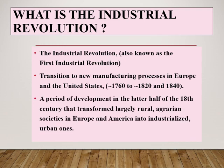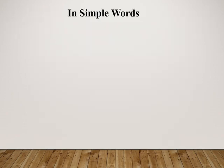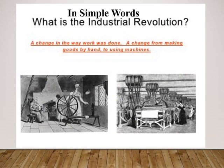This transition took place in the period from about 1760 to sometime between 1820 and 1840. It marked a period of development in the latter half of the 18th century that transformed largely rural, agrarian societies in Europe and America into industrialized, urban ones.